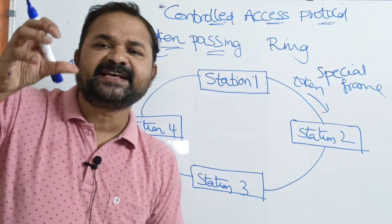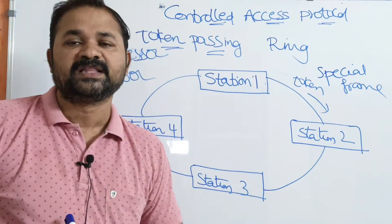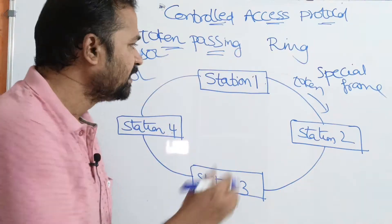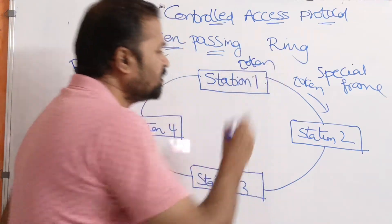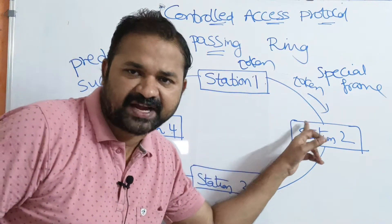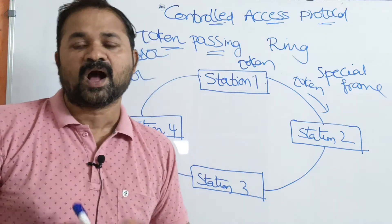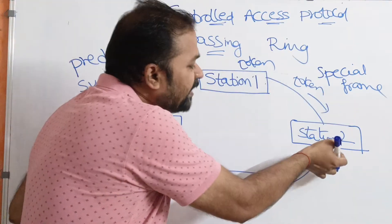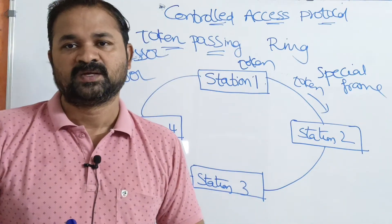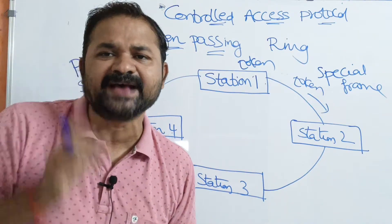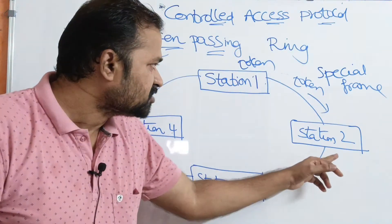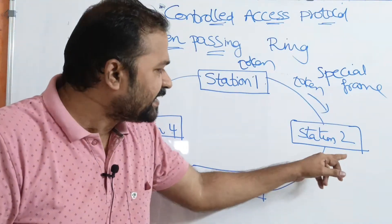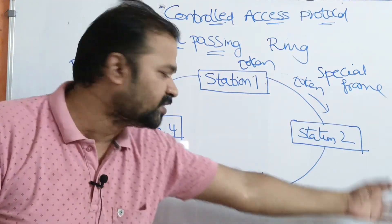If a station has the token, then only that station can send the data. Let station 1 has token — station 1 can use this channel in order to send the data. After sending the data, station 1 sends the token to its successor, that is station 2. Now let station 2 has some data to send. Station 2 can send the data only if it has the token. So now station 2 can send the data.